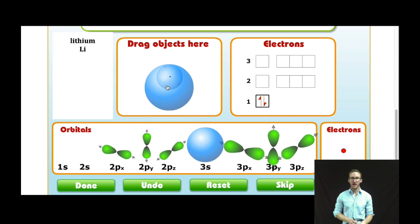Now I'm going to take the 2s orbital. Notice it's further from the nucleus, and I'm going to add lithium's final electron. Again, use this simulation to help you better visualize what's going on with the electron cloud.